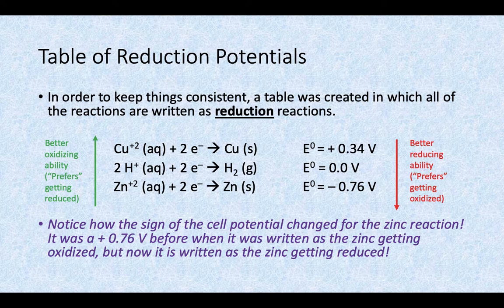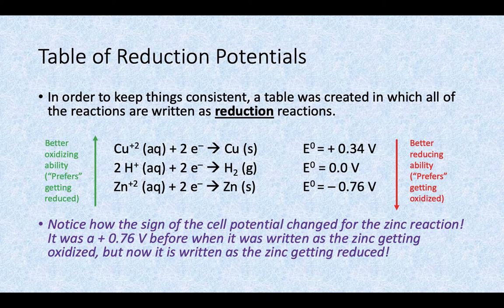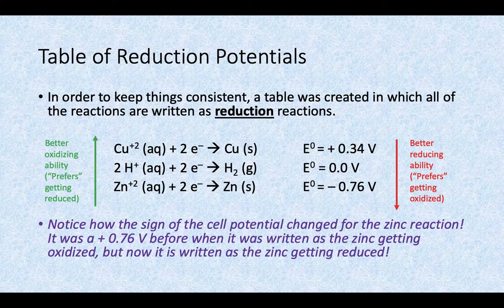The list is written so that the better oxidizing agents are at the top. Those are the ones that, if you wanted to personify it a little bit, prefer getting reduced — they do a good job at getting reduced. And the ones with better reducing agent ability — the ones that get oxidized better — are at the bottom of the list.